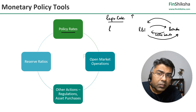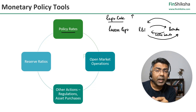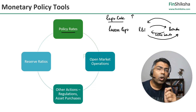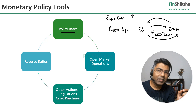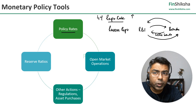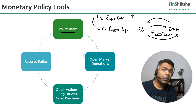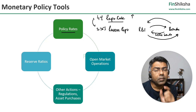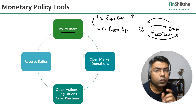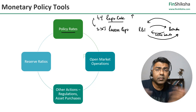The exact opposite of repo is reverse repo. When banks have excess money which they are parking with the RBI, they put the money at something called reverse repo, where the RBI pays interest to the bank. At the time of recording this video, the repo rate in India is 4% and reverse repo is 3.35%. This difference widened during the pandemic — usually earlier this difference used to be 25 basis points. So that's the policy rates.